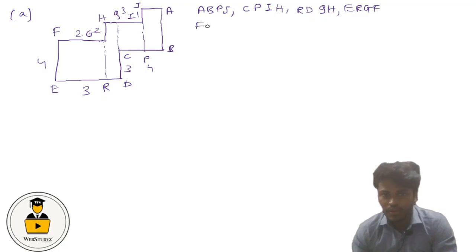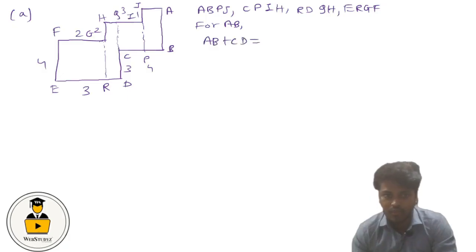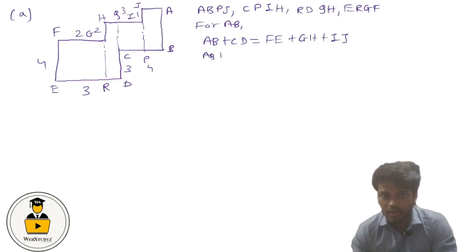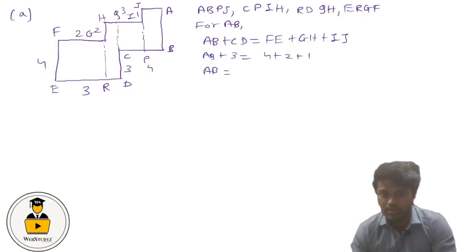Let us find out side AB. From the figure we can see that AB + CD equals FE + GH + IJ. We need to find AB; CD is given as 3, FE is 4, GH is 2, and IJ is 1. So AB equals 4 + 2 + 1 minus 3, which is 7 minus 3 = 4. So AB = 4.